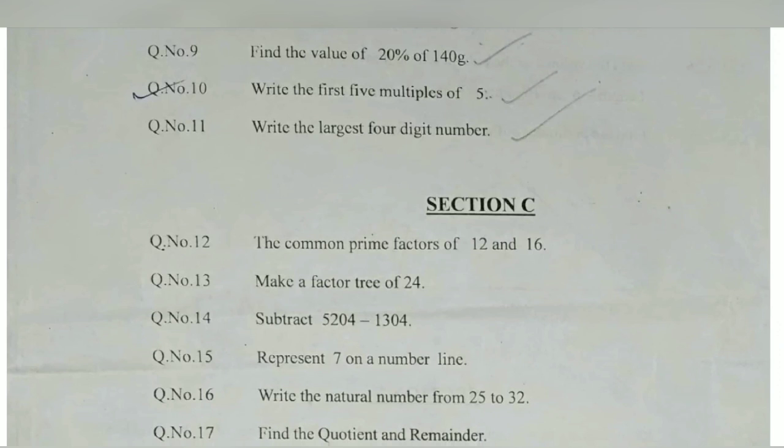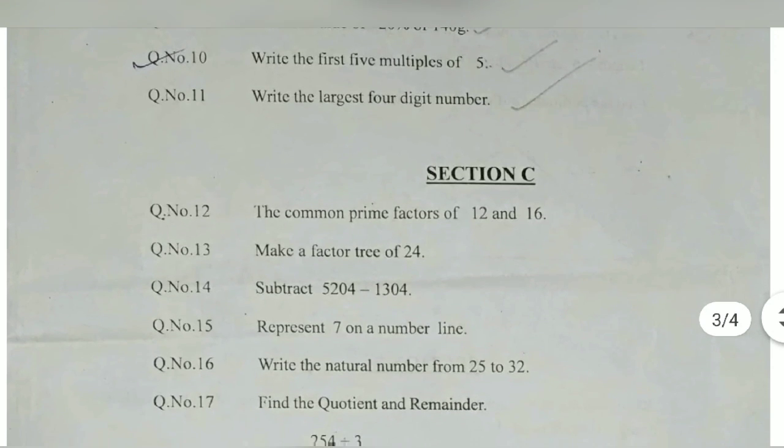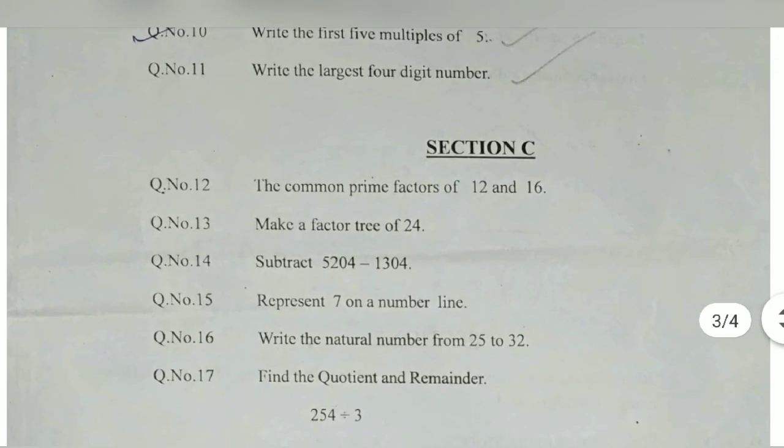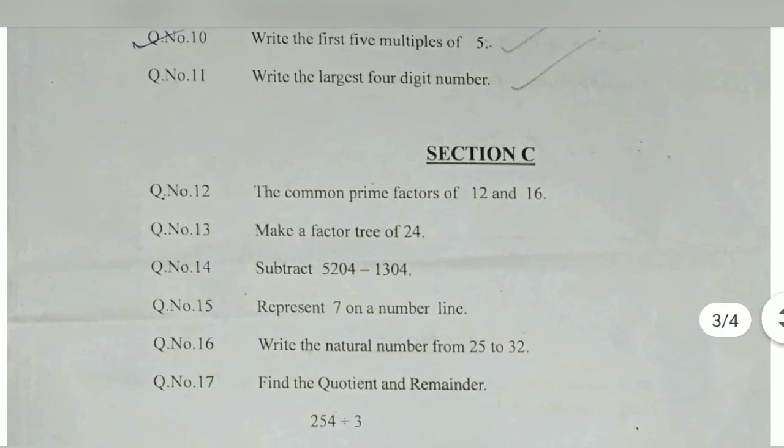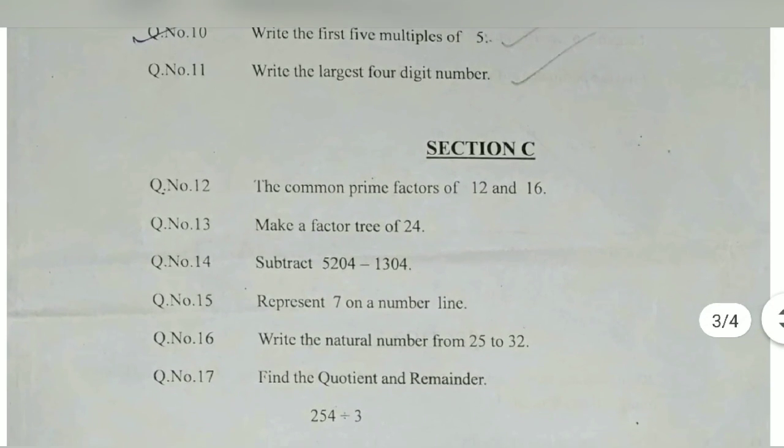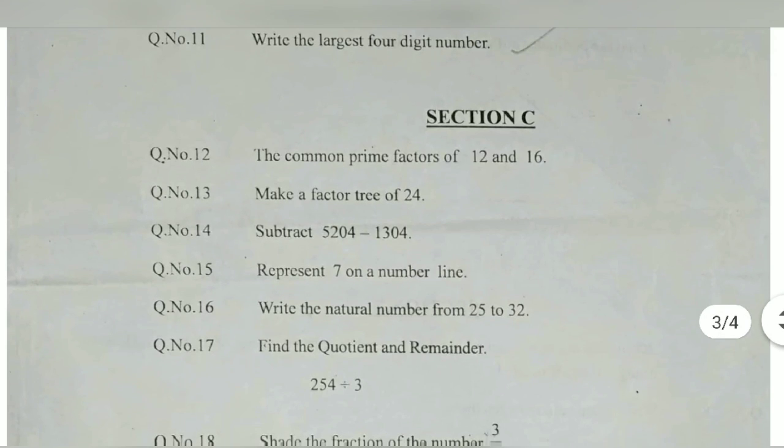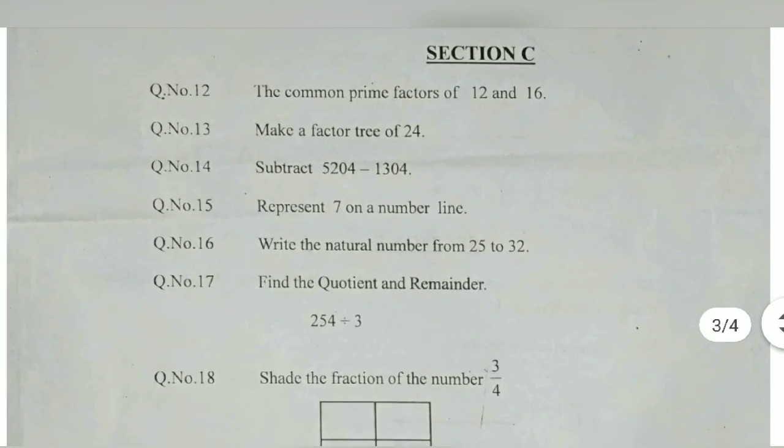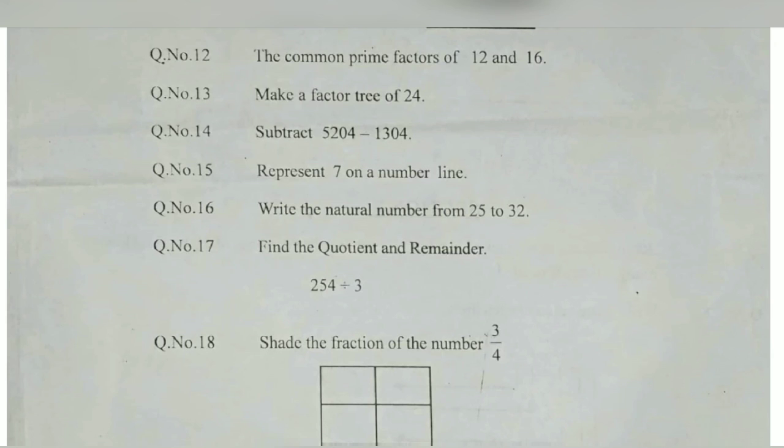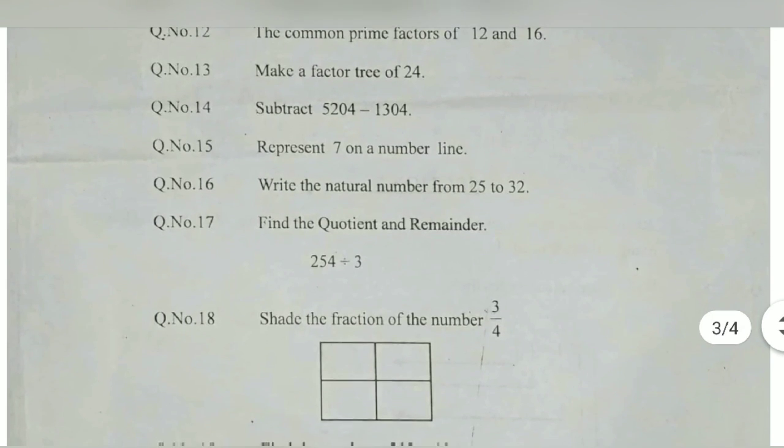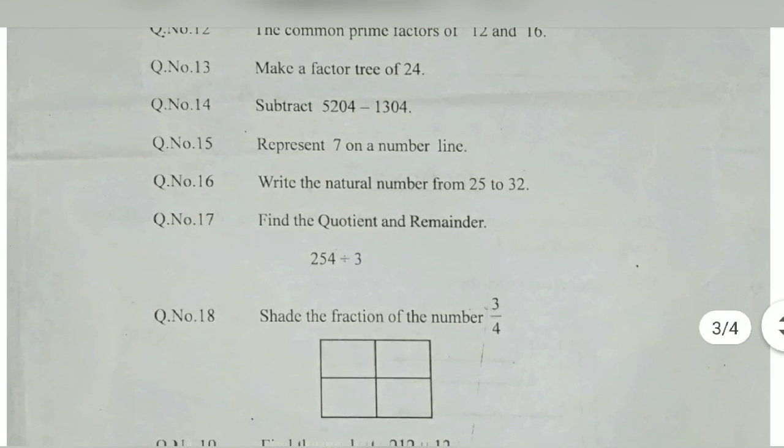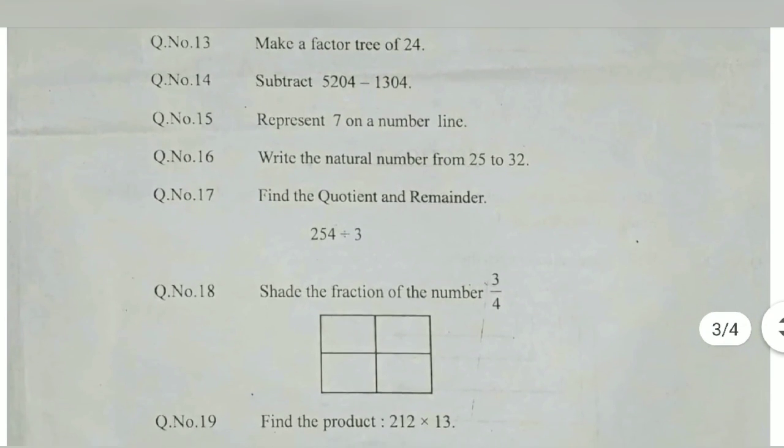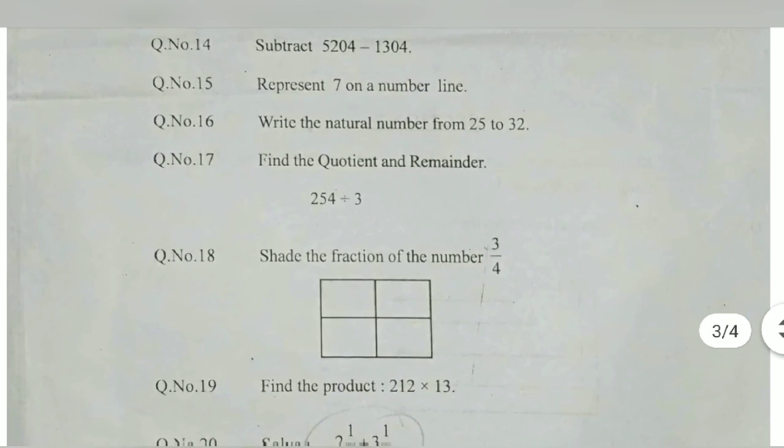Write the first five multiples of 5: one fives are 5, two fives are 10, three fives are 15, and 20 and 25. Write the largest four digit number, that is 9999. The common prime factor of 12 and 16 - find out the prime factorization of 12 and 16, we will get the common prime factor. Make the factor tree of 24 - factor tree means write the factors and you will get the answer.